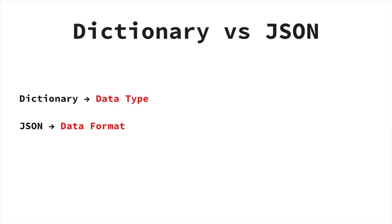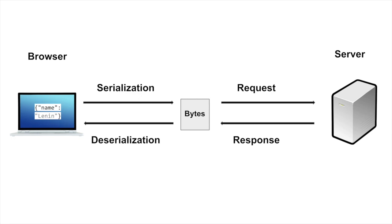A dictionary is basically a Python data type. However, JSON is a data format. To store a dictionary into a file or send it over a network connection, you need to turn the dictionary into a series of bytes. This is called serialization. JSON is basically one set of rules to convert a data structure to a series of bytes and vice versa. It is only when you convert that data structure to series of bytes that you can send it over to different servers as a request and get back some response. Once you get back the response in bytes, you convert those bytes to readable format in your browser — that is called deserialization.